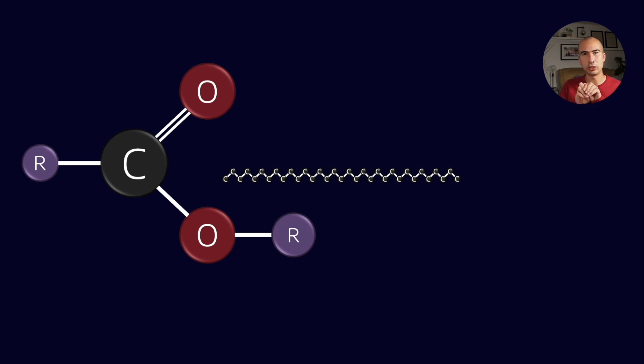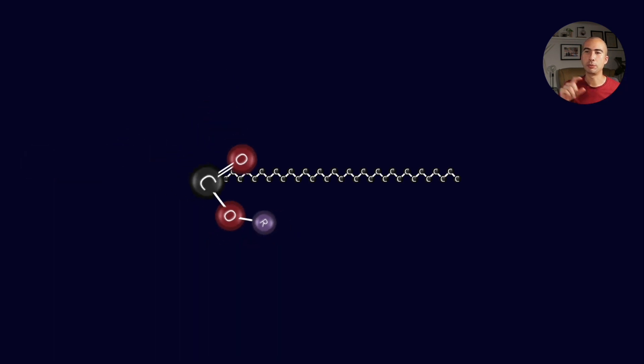But effectively what they are is you take a straight alkane and you take an ester functional group and you put the ester functional group along what we would call the backbone of the molecule, and the rest of the R functional group on the ester becomes itself a straight chain alkane.